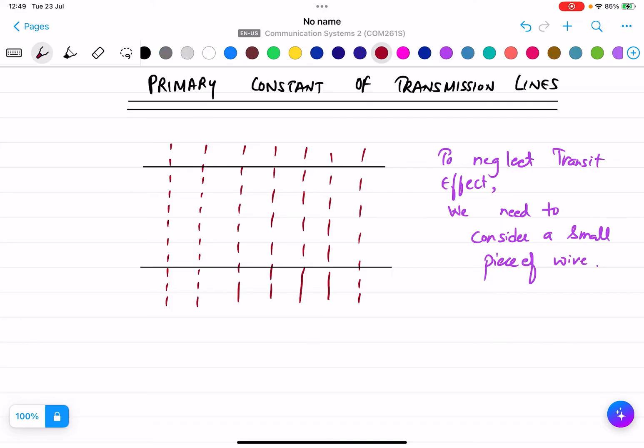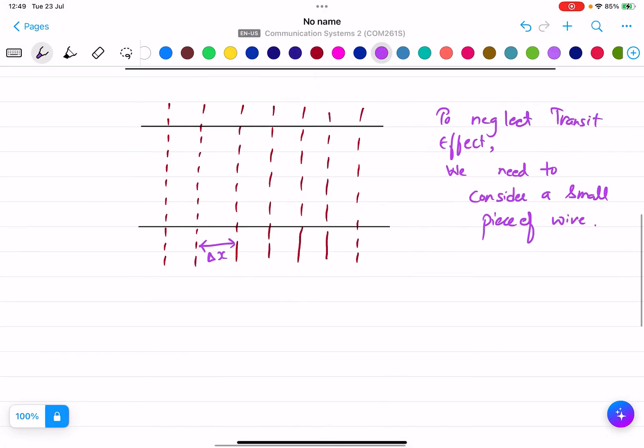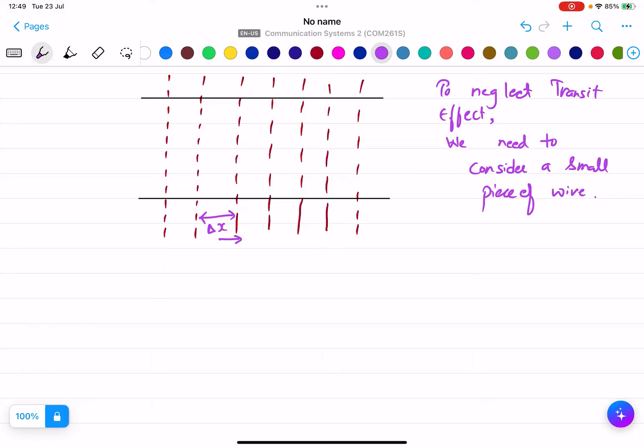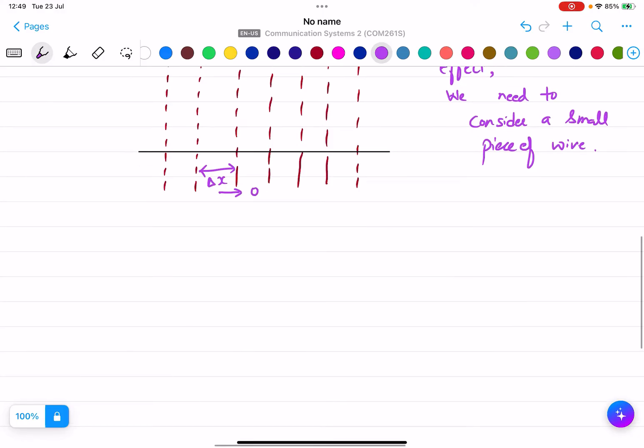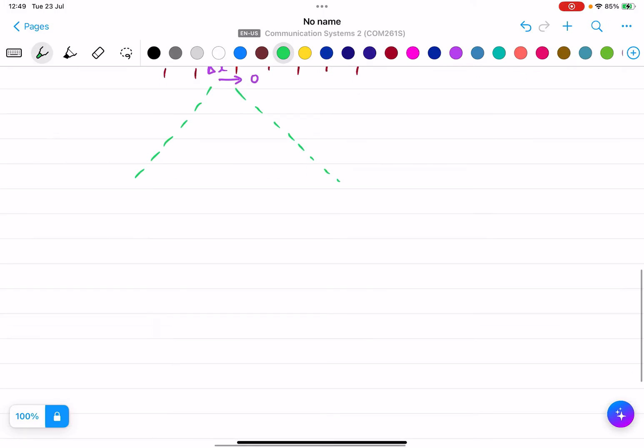Let's say this is delta x. Delta x tends to zero because it is a very small piece of wire. Now what does this delta x contain? Since it's a small piece of wire, what will happen?